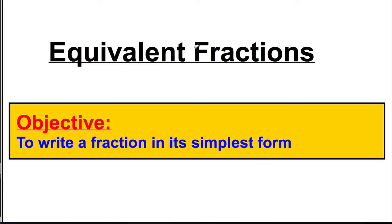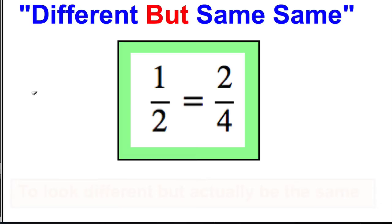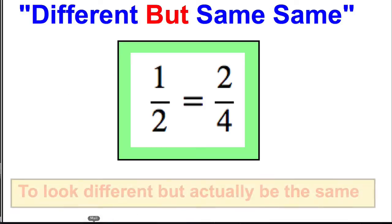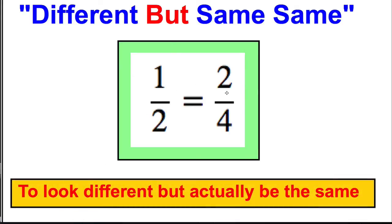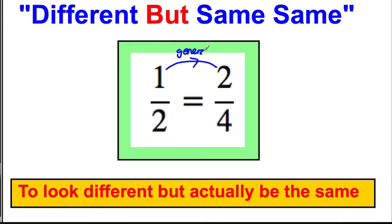In this video we're still dealing with equivalent fractions and our aim is to find a fraction in its simplest form. In the last video we talked about equivalent fractions — they look different but are actually the same thing. We previously generated equivalent fractions like 2 over 4, 3 over 6, etc. Now we're going to go backwards: taking an equivalent fraction and reducing it to its simplest form using prime factor decomposition.